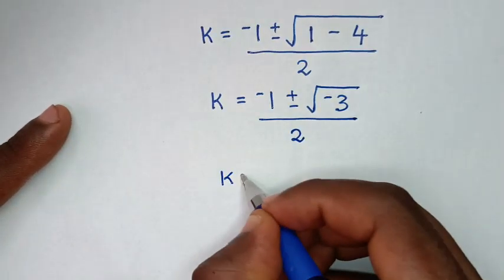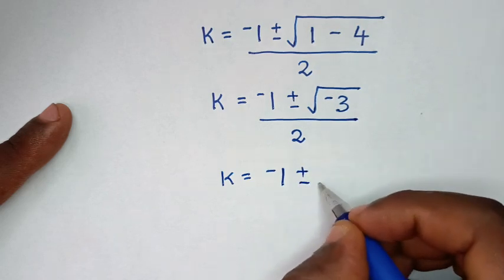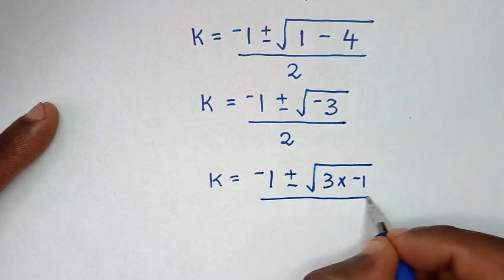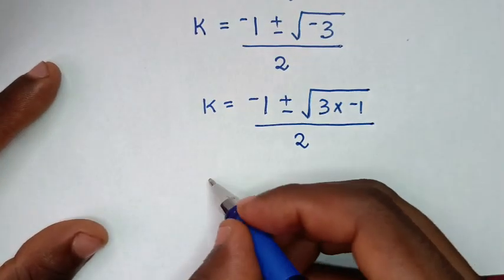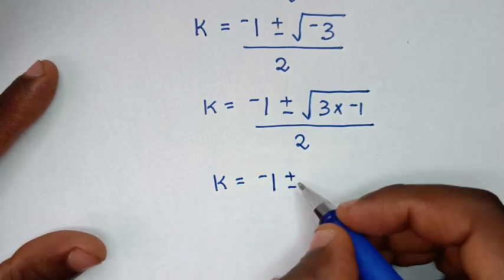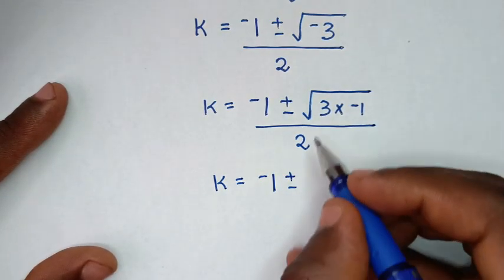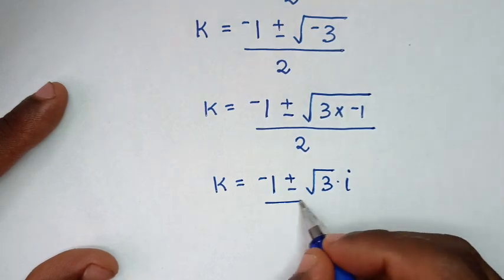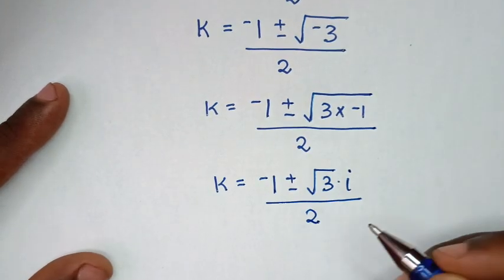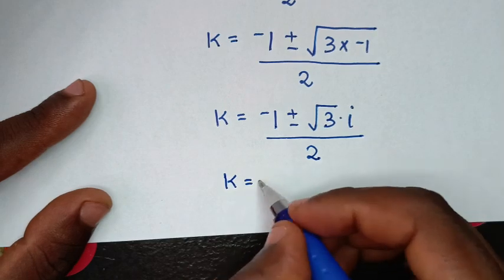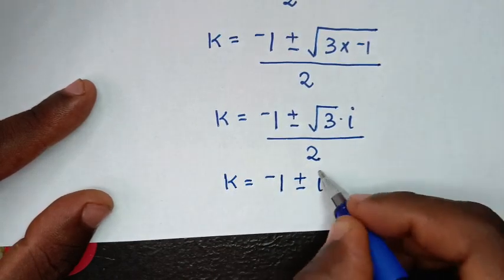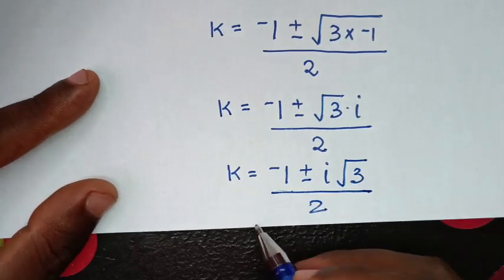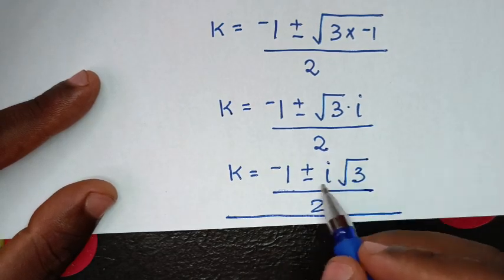So it will be k is equal to negative 1 plus or minus square root of negative 3, which is the same as 3 times negative 1, then over 2. So it will be k is equal to negative 1 plus or minus the square root of negative 1, which is i, times the square root of 3, then over 2. Therefore, k is equal to negative 1 over 2, and from here we have two complex solutions because of this imaginary number.